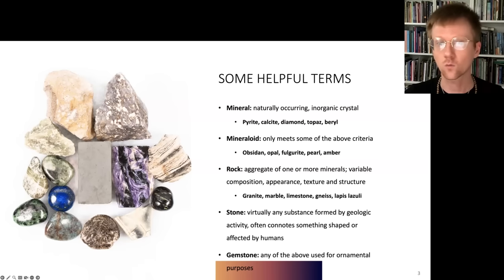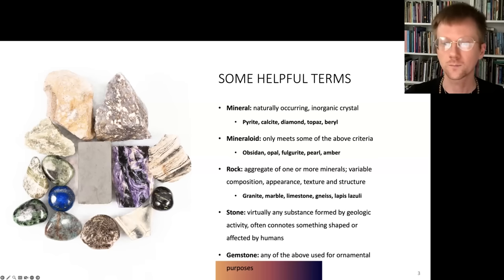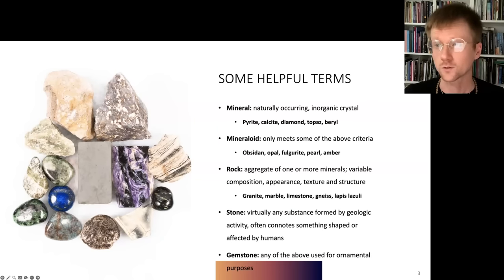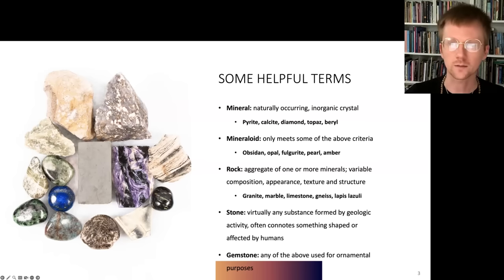Rocks are what happen when minerals come together — we consider them an aggregate of one or more minerals. They have variable composition, variable texture, and appearance; their structures are somewhat more malleable. Common rocks include granite, marble, and limestone. Some gems we know and love are technically rocks rather than single minerals, like lapis lazuli with its beautiful azure blue color. Stone is a fairly nebulous term — pretty much any substance formed by geologic activity — and different scientific disciplines often use 'stone' to connote something shaped or affected by human hands, like standing stones or stone tools.